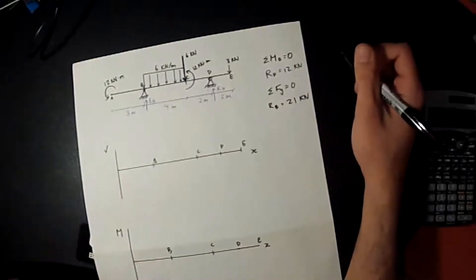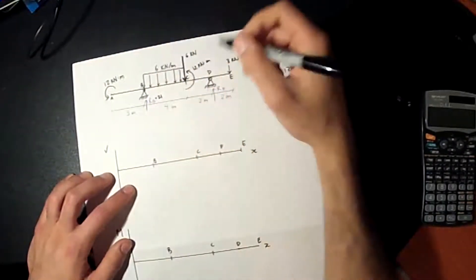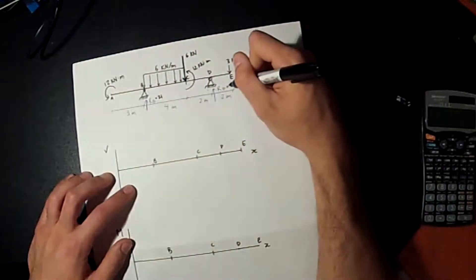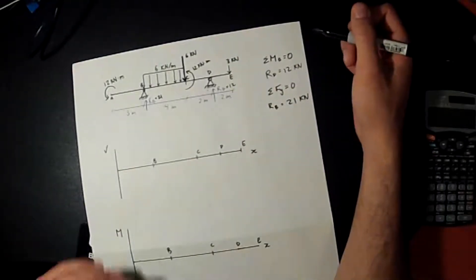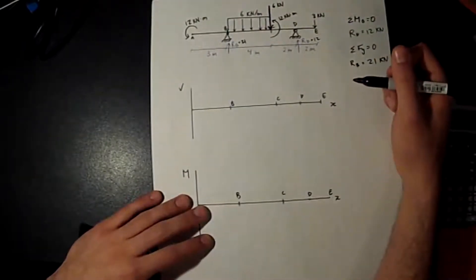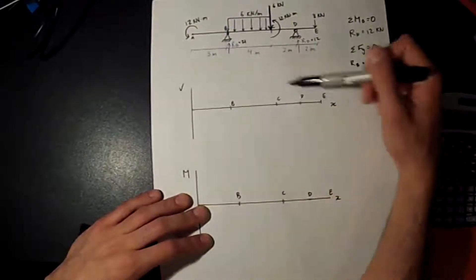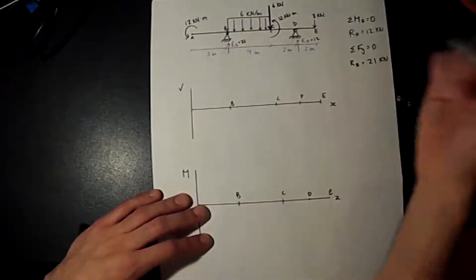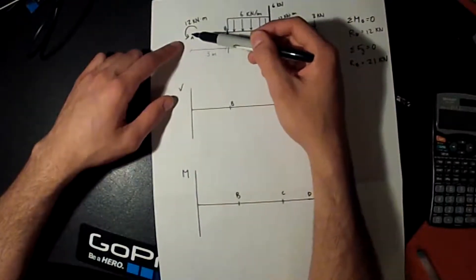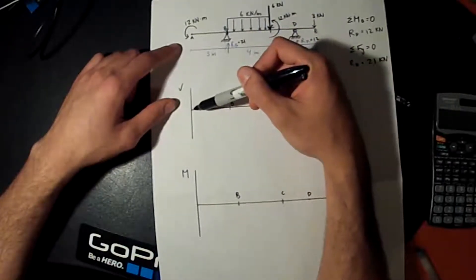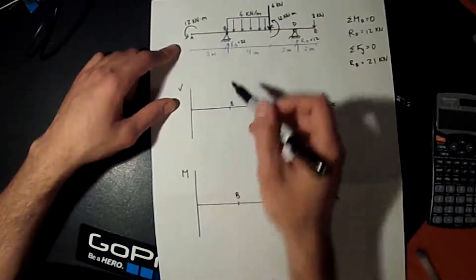So here we get Rb equals 21 and Rd equals 12, and now we can start drawing our shear force diagram. For the shear force, you start from the left to the right. Make sure that when you draw these you have your points corresponding. I start at A and look — are there any forces acting on A? There aren't, so this line is right on the x-axis. There's no force all the way up to B.